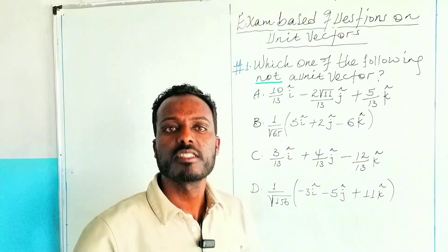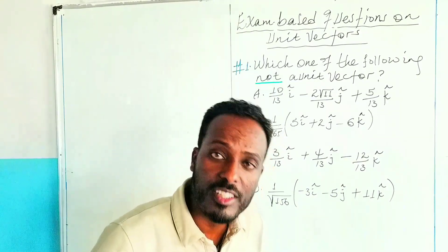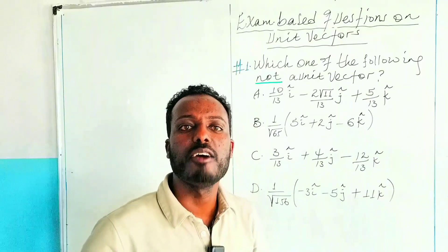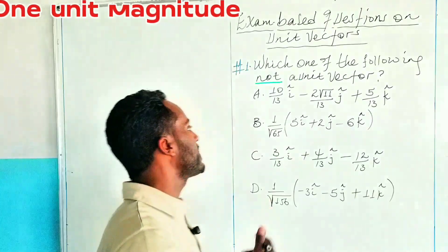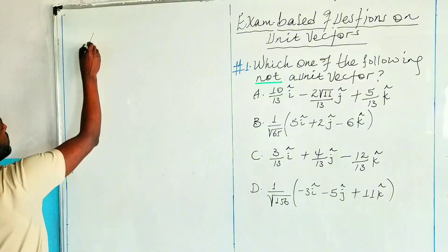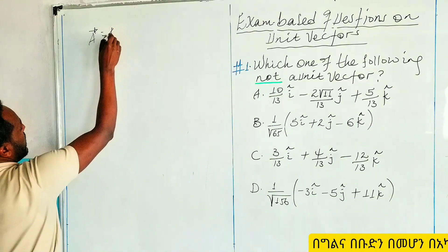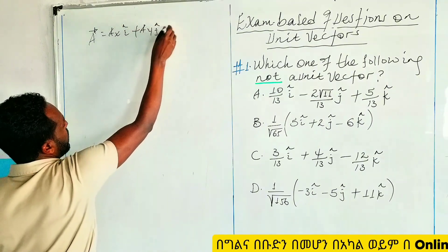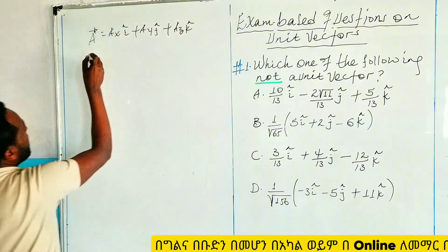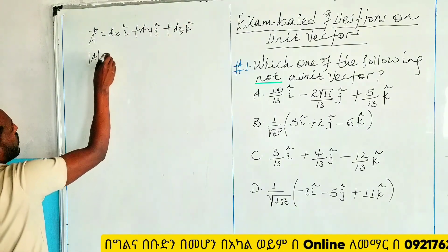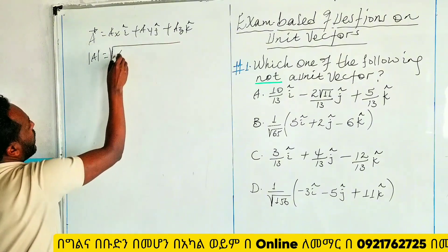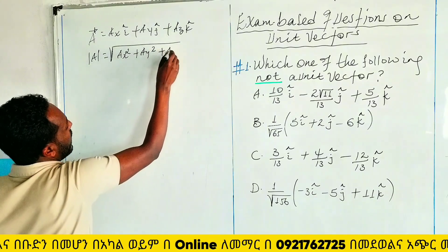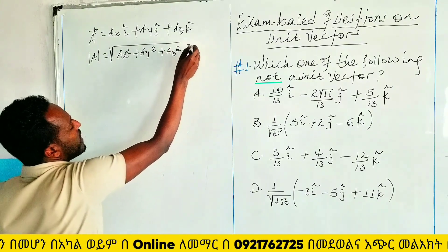To identify the answer, first you have to know what a unit vector is, and then what the mathematical expressions are to identify whether a vector is a unit vector or not. From the definition, a unit vector is a vector that has one unit of magnitude. So if we say vector A equals Ax·i + Ay·j + Az·k, then the magnitude of vector A equals the square root of (Ax² + Ay² + Az²), which must equal 1.